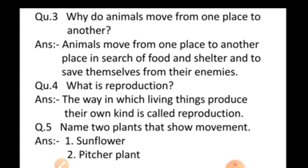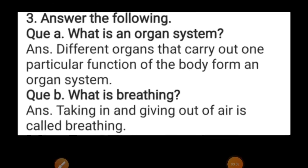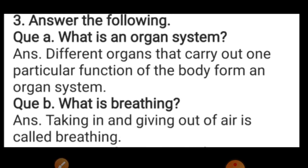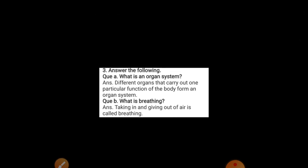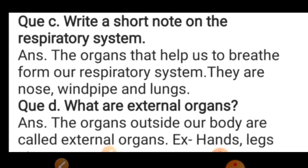Now come to Lesson Number 2 question answers. First question: what is an organ system? Different organs that carry out one particular function of the body form an organ system. Second: what is breathing? Taking in and giving out of air is called breathing. Third: write a short note on the respiratory system. The organs that help us to breathe form our respiratory system — they are nose, windpipe, and lungs.